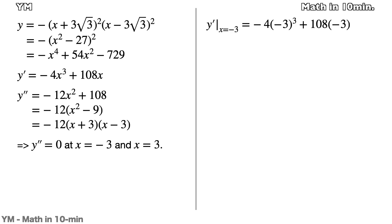This is y' at x equals -3. And by calculating it, we get -216. So the lowest slope of y on the left interval is -216.